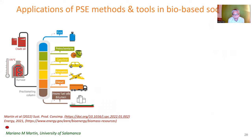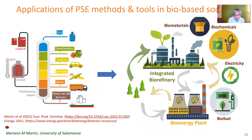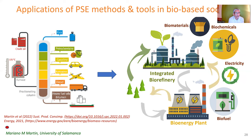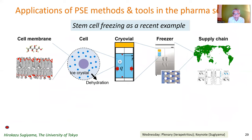In the area of bio-based society, work from the University of Salamanca by Mariano Martin and his group explores replacing crude oil-based refineries with integrated biorefinery concepts — taking biomass from different locations and converting it into needed products at those locations. Their work considers different kinds of biomass, different products, and different types of analysis.